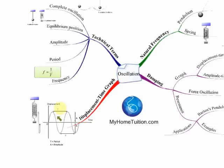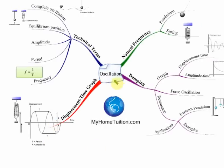From the displacement-time graph you can find the capital letter T, which is called the period. You can find the period of oscillation from the displacement-time graph, and you can also find the amplitude from the displacement-time graph.